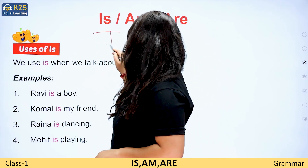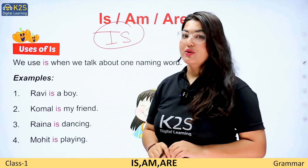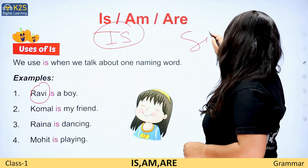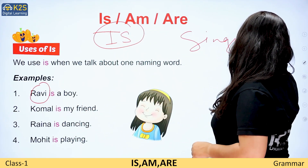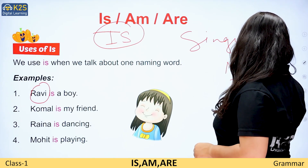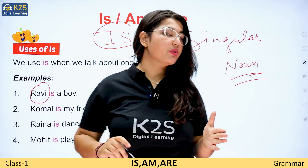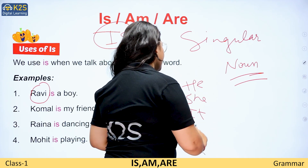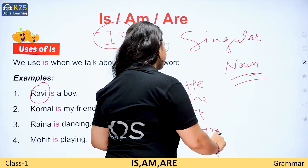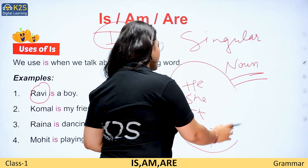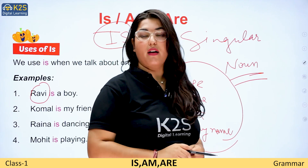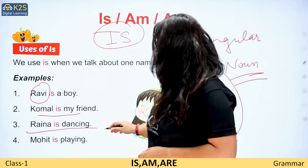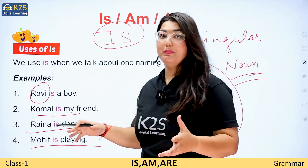If we talk about 'is', we use it with singular nouns and pronouns: he, she, it, or any name. For example: Komal is my friend. Raina is dancing. Mohit is playing.